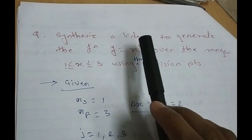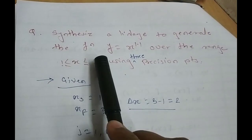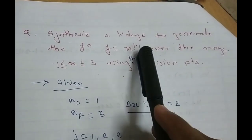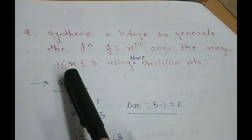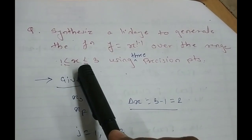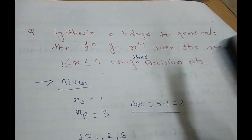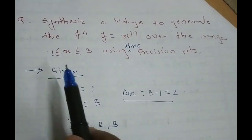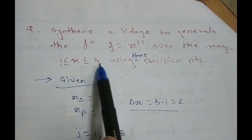So, here is a question. Synthesize a linkage to generate the function y equals x raised to 1.1 over the range of 1 less than equal to x less than equal to 3 using 3 precision positions. So, I just wrote given data where we have this range.